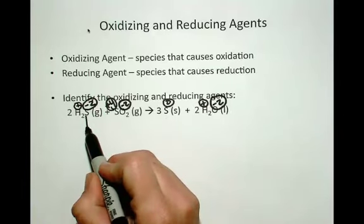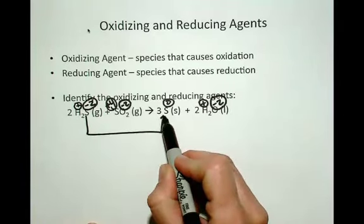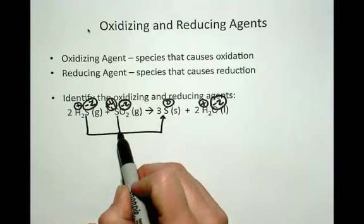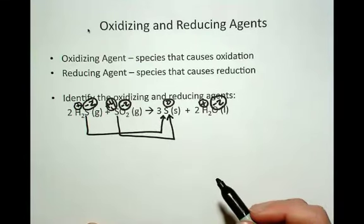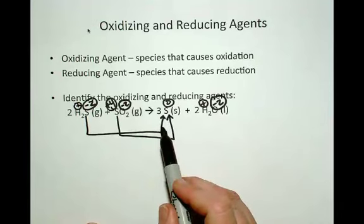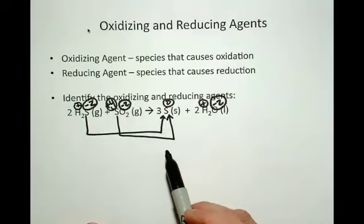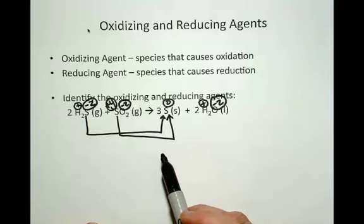So this sulfur is changing into two of those sulfurs, and this sulfur is changing into the other sulfur to make a total of 3. So the product is the same for both what we would call the oxidation and the reduction. They're both changing into elemental sulfur.